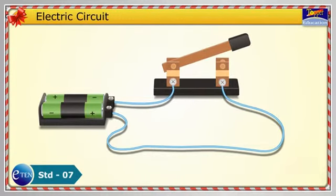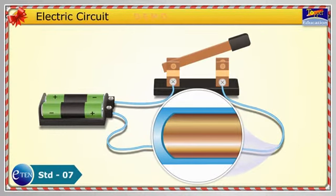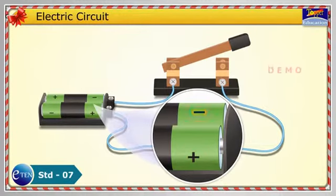Materials such as metal wires allow electric current to pass through them easily. They are called conductors. They can be used to link positive and negative ends of a battery, creating a circuit.